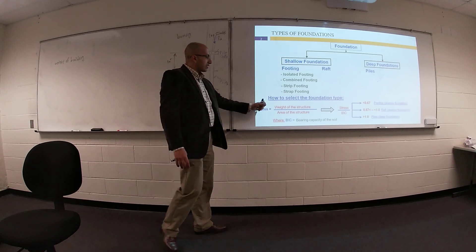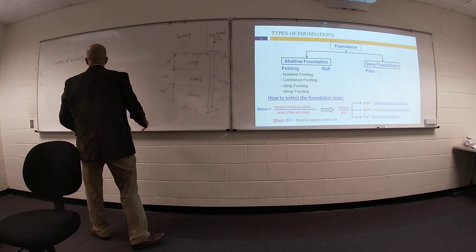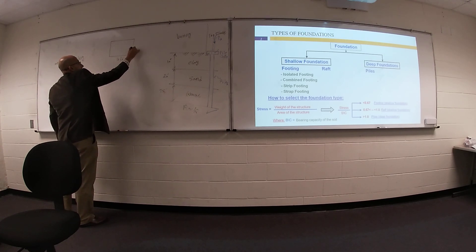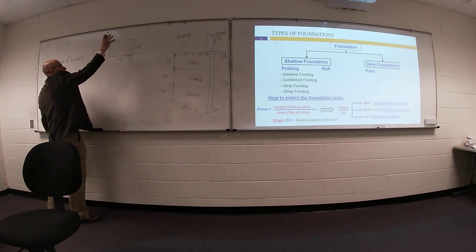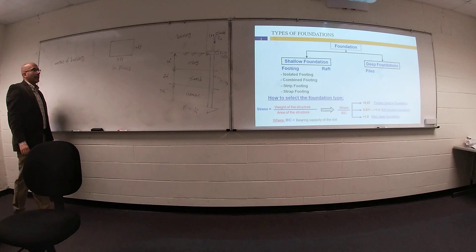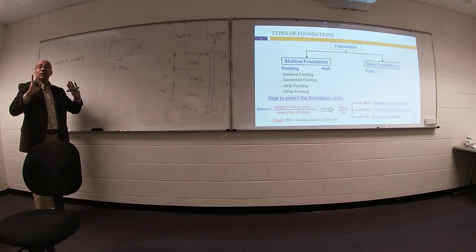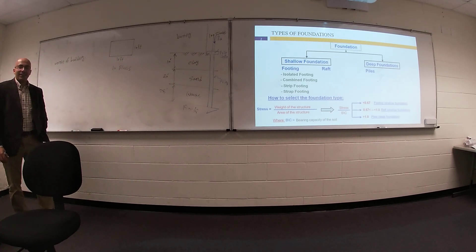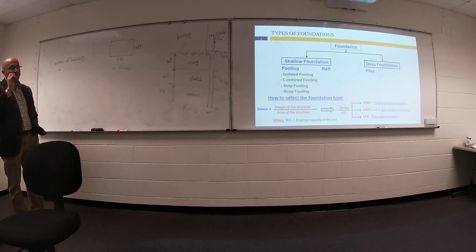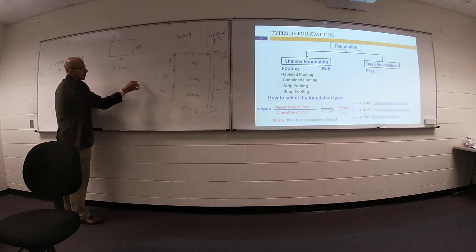What do we mean by weight of the structure divided by area of the structure? If you divide weight by area, you can get stress. We have a building area of 10 feet by 10 feet, and we are going to construct a 10-floor building. To get the accurate weight of your building, if you have a Reza model, you can go to results and column reactions — the software tells you the reaction for each column.